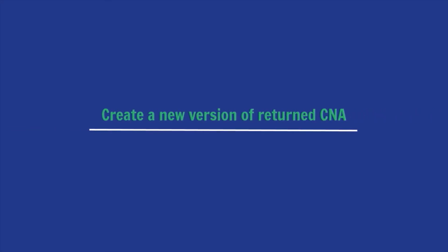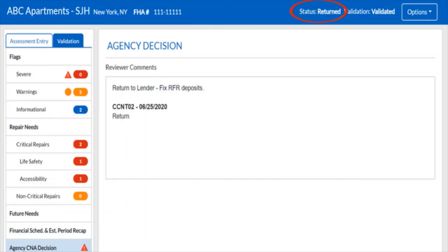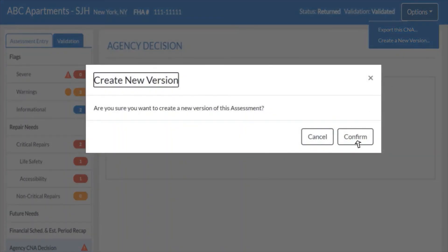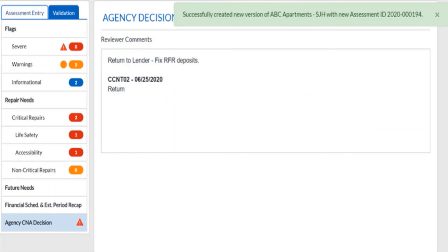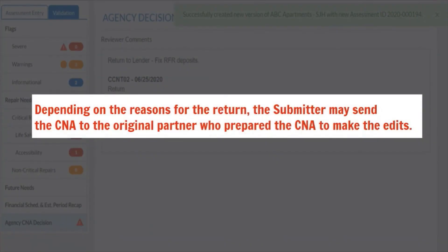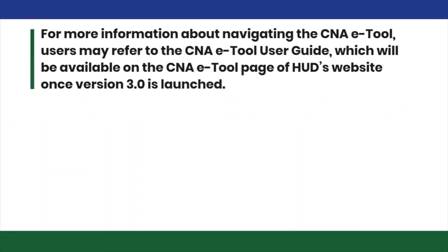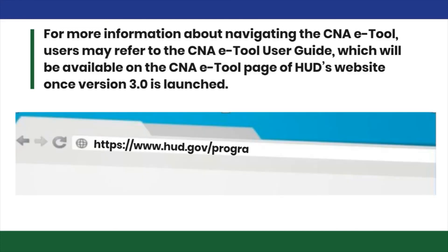Step 6 is to create a new version of the returned CNA for revision and resubmission. CNAs in return status can no longer be edited; however, the submitter can select Create a New Version in the Options menu to duplicate the returned CNA. This new version may be edited and revised freely. Depending on the reasons for the return, the submitter may send the CNA to the original partner to make edits, and once all issues are addressed, resubmit to the approving agency.